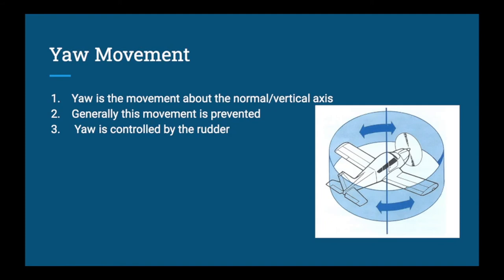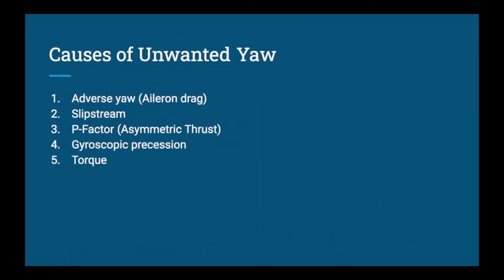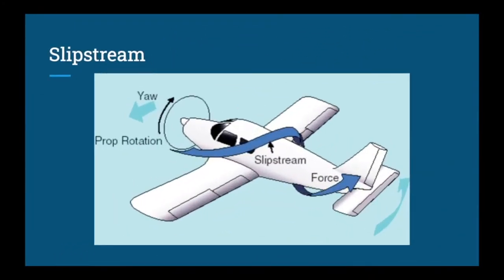The last movement is yaw. Normally this movement is prevented using the rudder, because we want to fly straight with the tail following the nose. You'd notice yaw if the nose was moving left or right without any roll input. It is controlled by the rudder pedals. There are five causes of unwanted yaw: adverse yaw (also known as aileron drag), slipstream, P-factor (propeller factor, also known as asymmetric thrust), gyroscopic precession, and torque. Today we'll focus on slipstream.